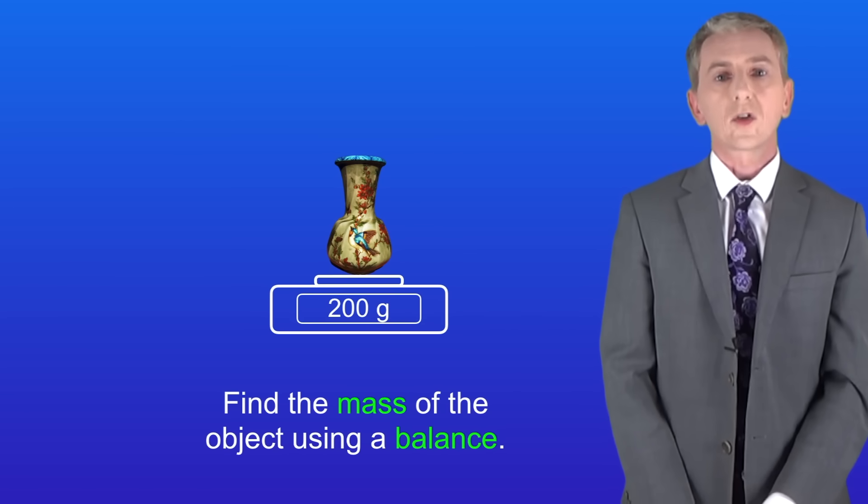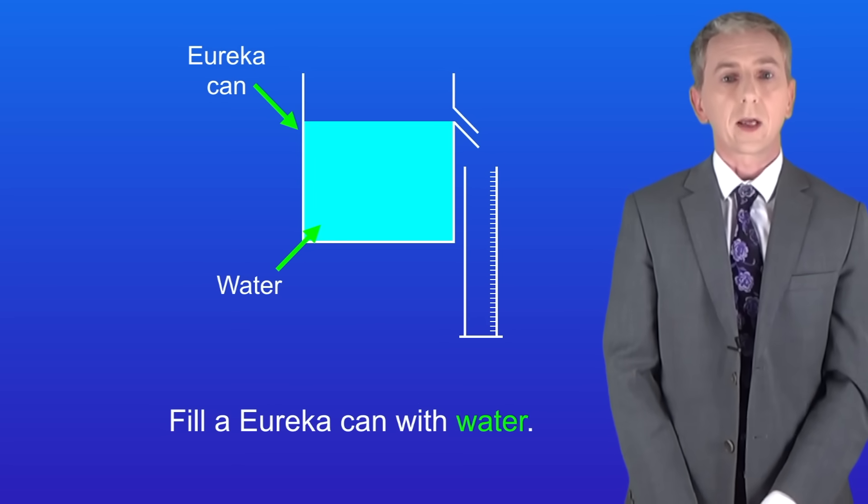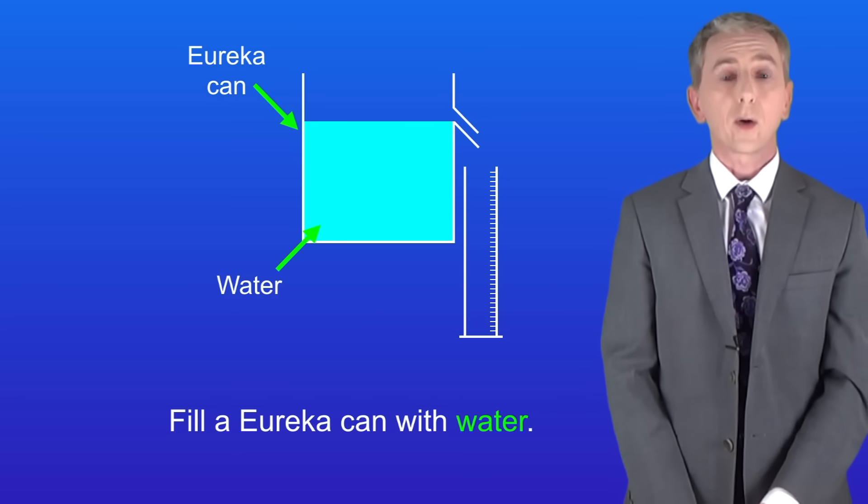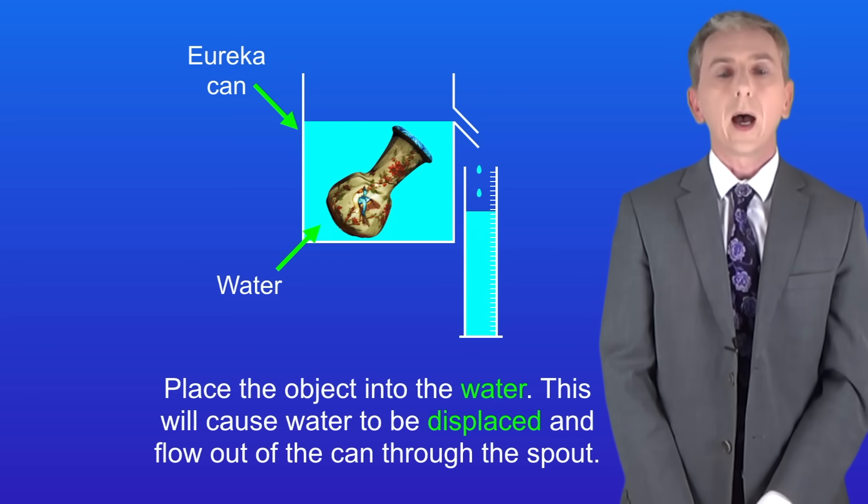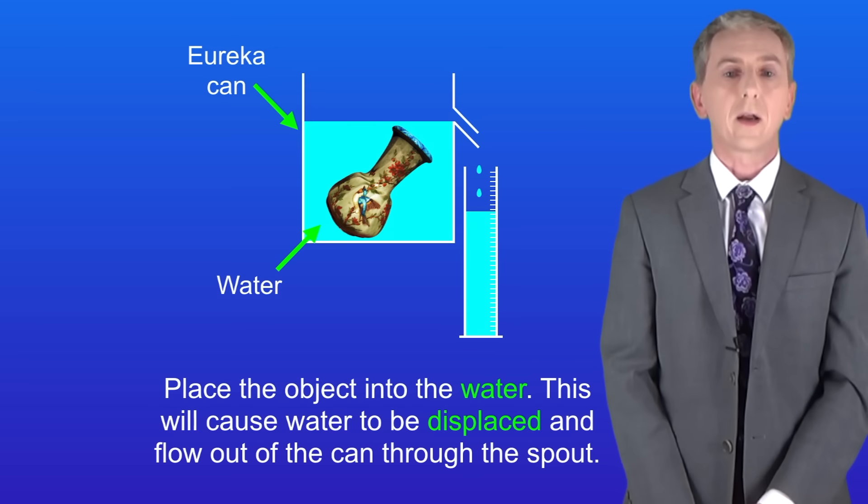Just like before we start by finding the mass of the object using a balance. We then fill a eureka can with water. A eureka can has a spout, so the water can flow out of the can. Now we place the object into the water. This will cause water to be displaced and it will flow out of the can through the spout.